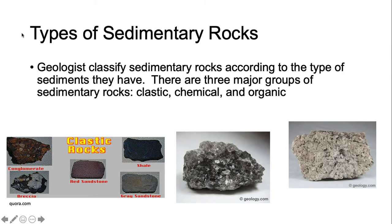There are three types of sedimentary rocks: clastic, chemical, and organic. Clastic means from bits and pieces of other rocks. Chemical means precipitated from solution. And organic means it's from decayed plants and animals.